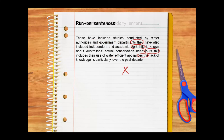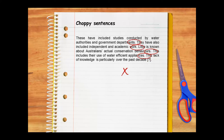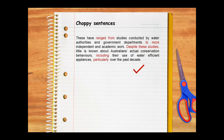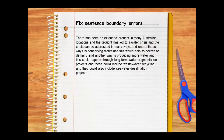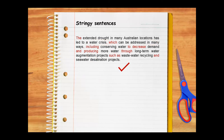A run-on sentence includes several sentences that need to be split up. One way of fixing it is using full stops, but if we do this we create another problem — choppy sentences. Several short sentences placed one after another disturb the flow of writing. Try to combine the ideas within one or two sentences if you can. A stringy sentence uses the same coordinating conjunction 'and' to join a number of ideas together. An easy fix is to combine some ideas into a complex sentence, getting rid of unnecessary words.